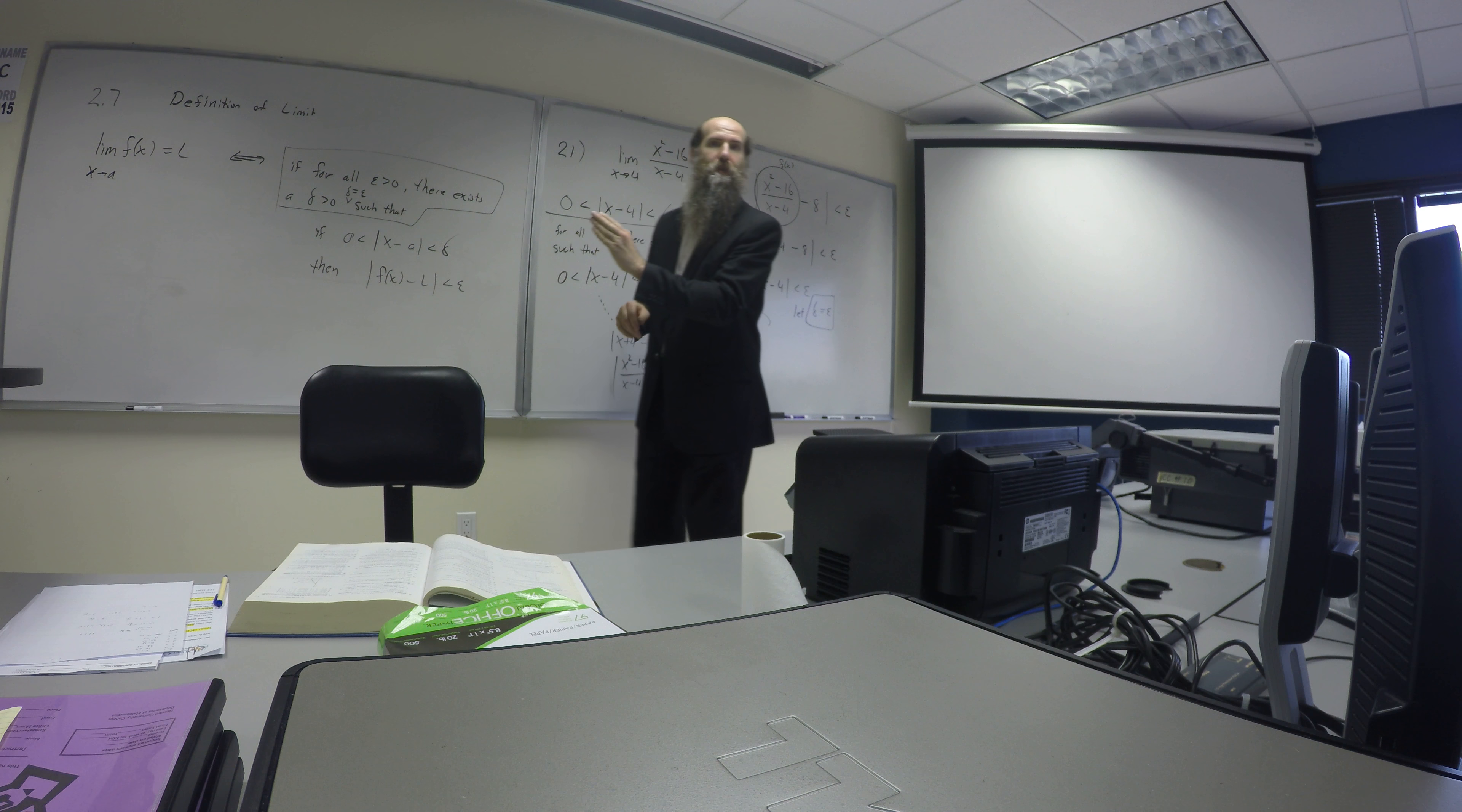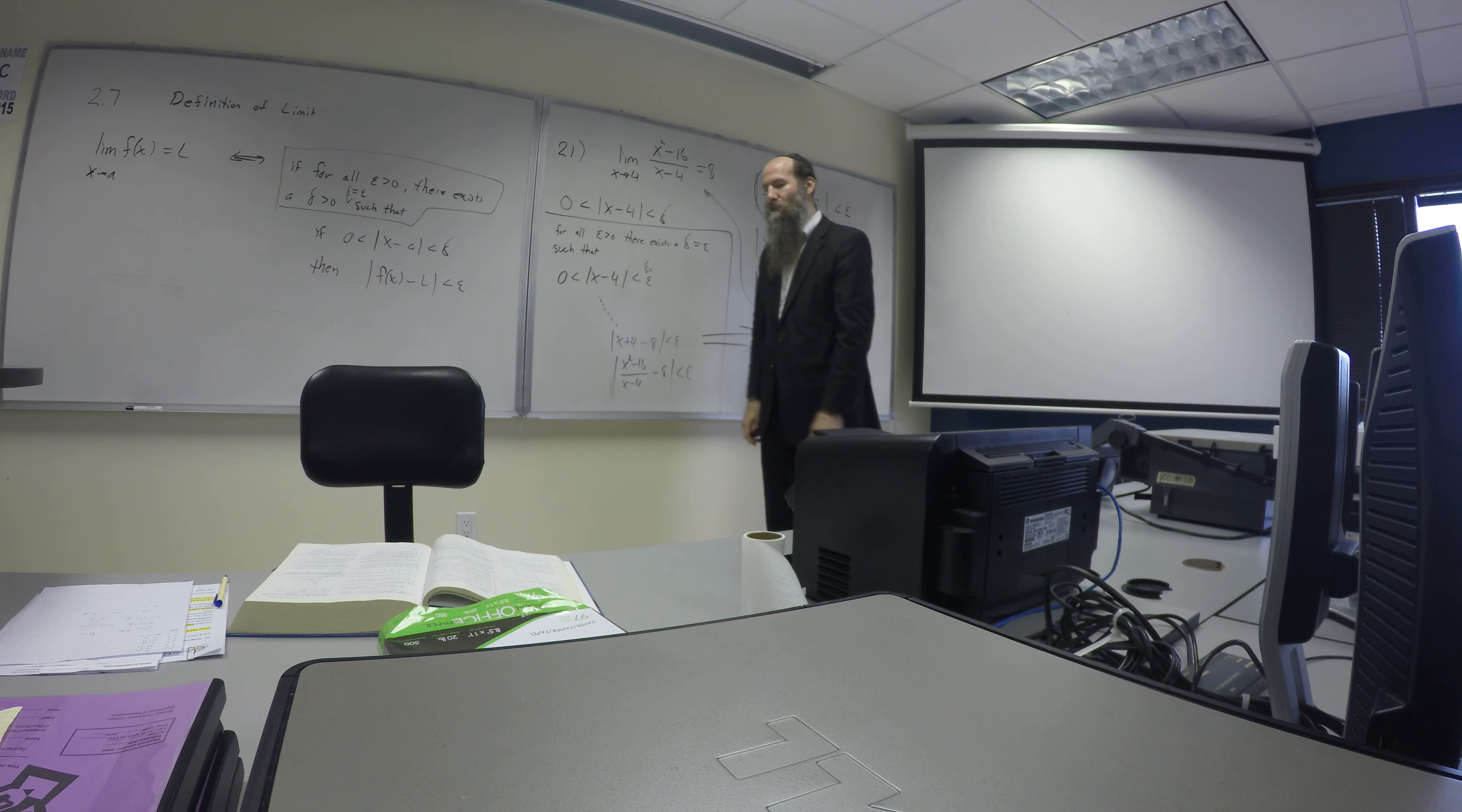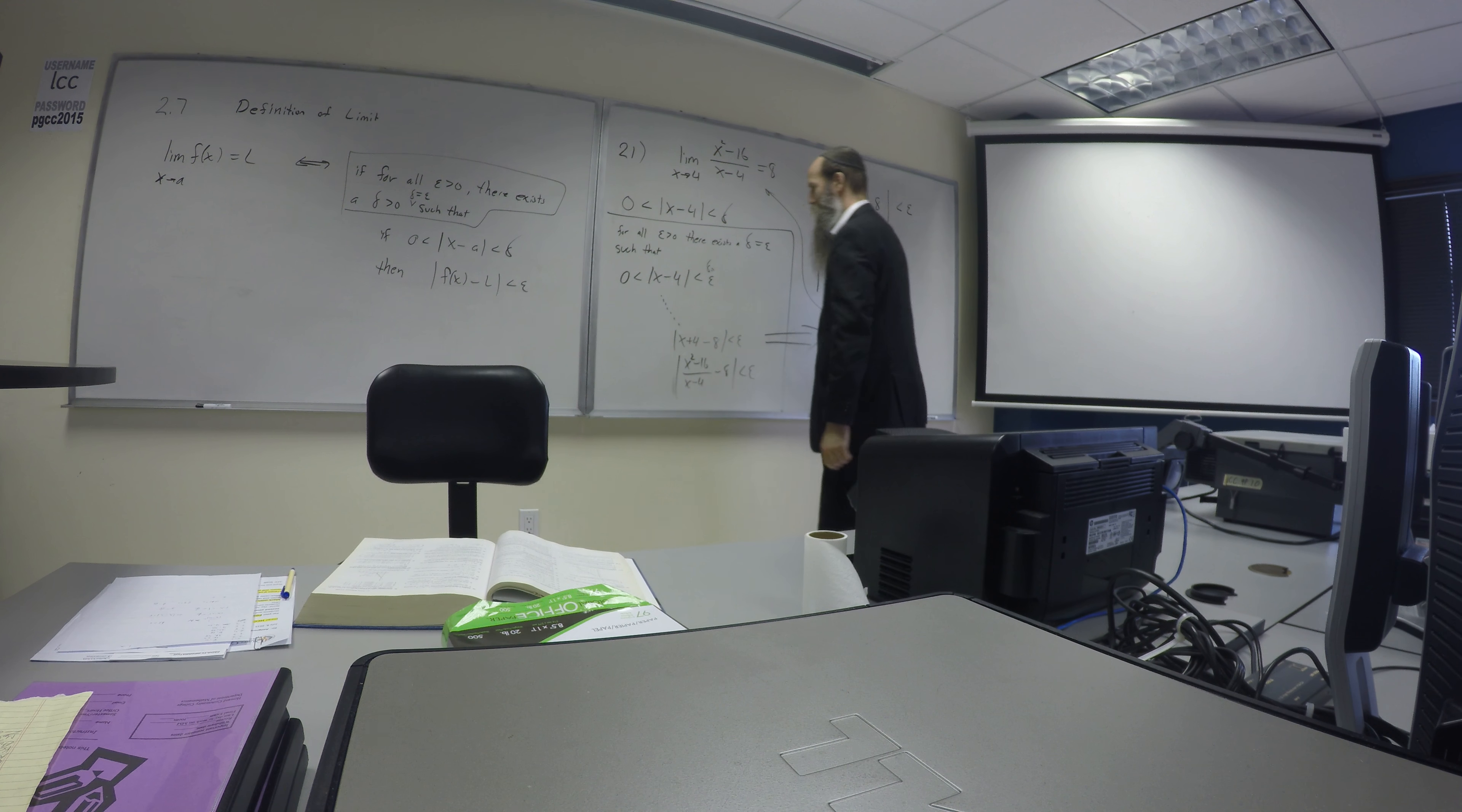Anytime you see absolute value of something minus something, that is a distance. It's hard to think about it that way, because you're used to think about it just, like, algebraically. But in terms of geometry, that is the distance between two things. Perfect. Okay? Distance between x and 4 should equal distance between a function and a.